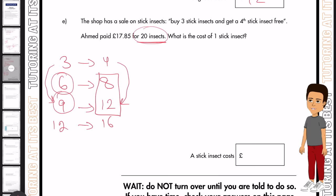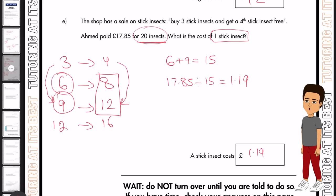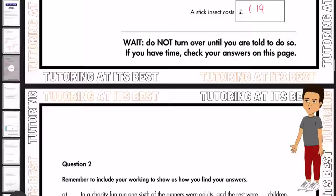So what is the cost of one stick insect? So all we need to do here is add six and nine, which gives us 15. And then 17.85 divided by 15, and that gives us one pound 19. So now we know the value of one stick insect is one pound 19. And remember, this row here is what he pays for, and this is what he gets at the end with one free.